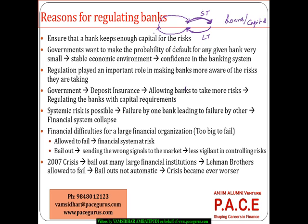To make sure that the bank keeps enough capital to meet the risks that are coming up is the major objective of any regulation. The government of any country wants the probability of default of the bank to be as low as possible, because when a bank is defaulting it is going to impact the entire financial system. People will lose confidence in the banking system, which will have a huge impact on the functioning of the economy. So governments typically want a stable economic environment and want the banking system to be more effective and efficient, with the bank's default rate much, much lesser.